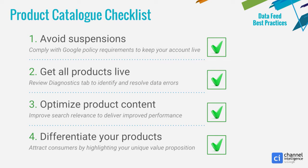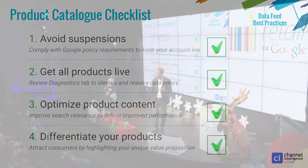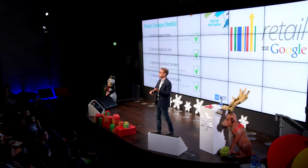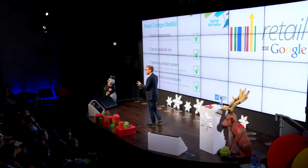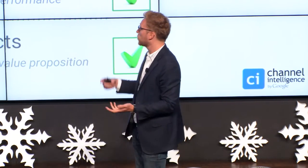Number two is just to get all of your products live. This refers to item level or product level disapprovals. The best piece of advice I can give you regarding point number two is to review as often as possible — daily if possible — the diagnostics tab in Merchant Center. The diagnostics tab has improved significantly in the last 12 months. On any given day you can see which of your products are disapproved, why they're disapproved, and see all the products that have a warning for potential future disapproval, and it'll even give you some tips on how to optimize your feed.